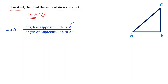The length of the side opposite to angle A is BC, and the length of the side adjacent to A is AB. So, BC divided by AB equals 4 by 3. That means BC is 4 and AB is 3.